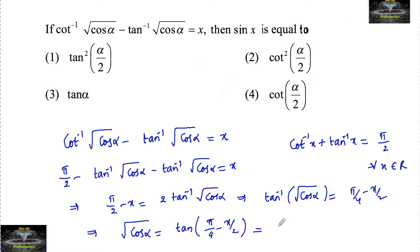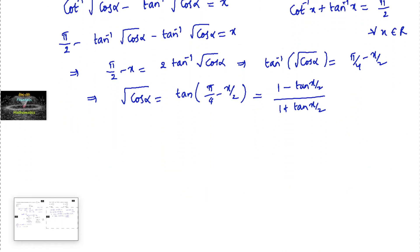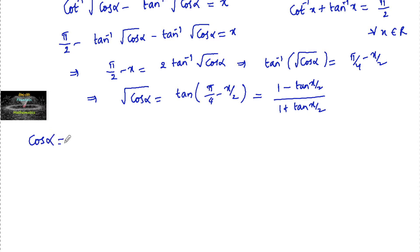This equals (1 minus tan(x/2)) divided by (1 plus tan(x/2)), using the tan(A − B) formula: tan A minus tan B divided by 1 plus tan A·tan B. Squaring both sides, cos α equals (1 plus tan²(x/2) minus 2·tan(x/2)) divided by (1 plus tan²(x/2) plus 2·tan(x/2)).